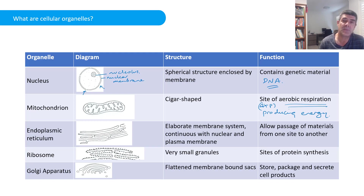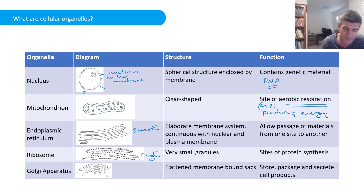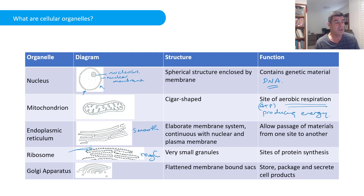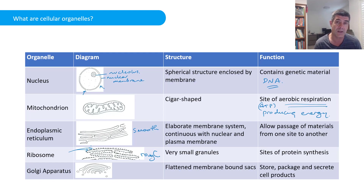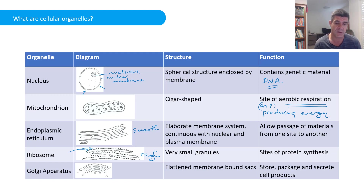There are two types of endoplasmic reticulum: smooth and rough. The rough endoplasmic reticulum is associated with tiny ribosomes on its edges. The endoplasmic reticulum is a continuous membrane system that can link to both the nuclear membrane and the plasma or cell membrane. It is a great transport site, allowing the passage of materials from one part of the cell to another.